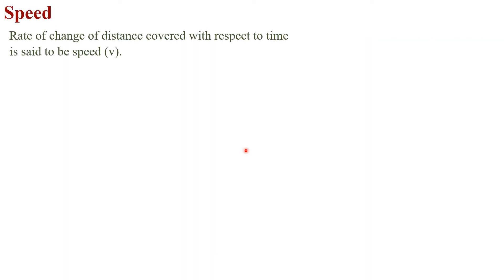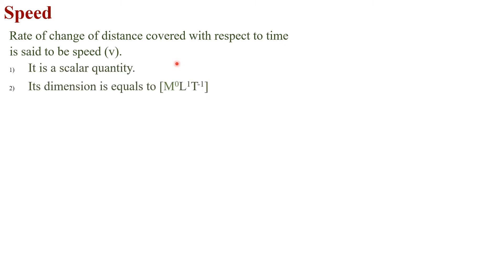Speed: the rate of change of distance covered with respect to time is said to be speed, represented by V. Speed is the ratio of distance to time. When we calculate the distance with respect to time, we call it the speed of the moving object. It is a scalar quantity. Its dimensional formula is M⁰L¹T⁻¹, and its SI unit is meter per second.